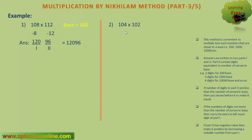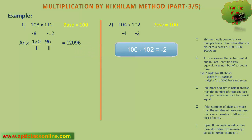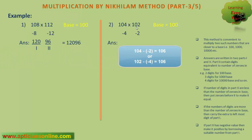Now the next question: 104 multiplied by 102. Again, the base will be 100. And 104 is how much more than its base? Minus 4. And 102 is how much more than its base? It is minus 2. As we know, the first part will either be the difference of 104 and minus 2, or 102 and minus 4, which is 106. This is the first part.